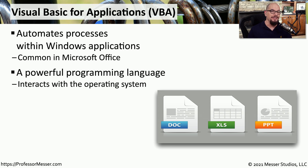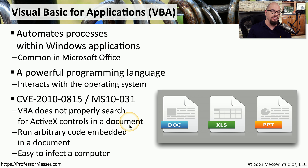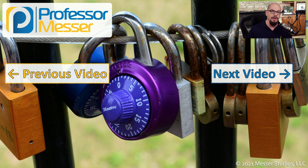As you can imagine, this might be a very good place for an attacker to try gaining access to an operating system. An example of a vulnerability that might cause exactly that type of access is CVE-2010-0815. In this vulnerability, VBA does not properly search for ActiveX controls in a document, which allows the attacker to run their own code on the device — meaning they could install malware, have a backdoor installed, or have any other type of malicious software execute on that computer.